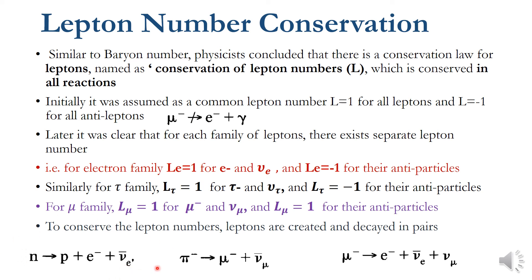This is the standard negative beta decay. Another example: π⁻ → μ⁻ + ν̄_μ. On the left-hand side, the electron lepton number L_e = 0 (π⁻ is a meson). On the right-hand side, μ⁻ has L_μ = +1 and the muon anti-neutrino ν̄_μ has L_μ = −1, so the net L_μ = 0 on both sides. Lepton number is conserved.